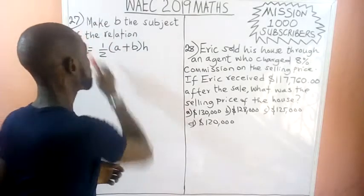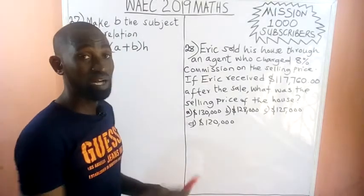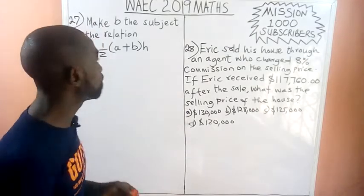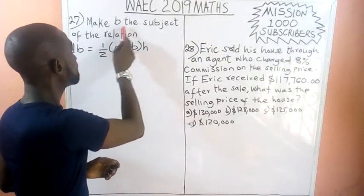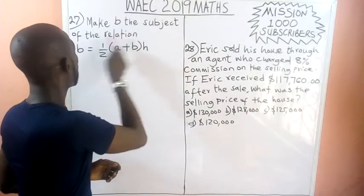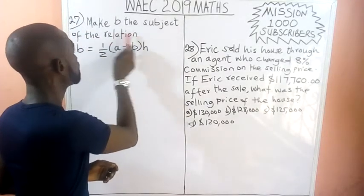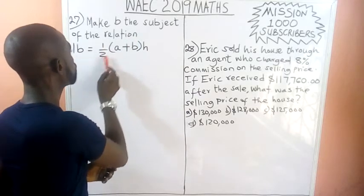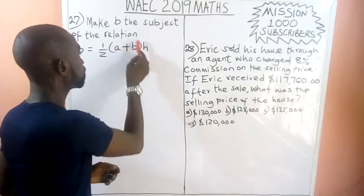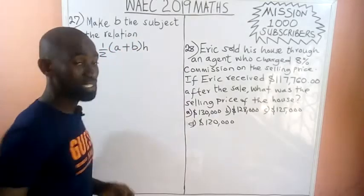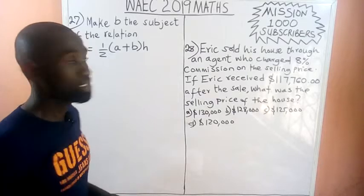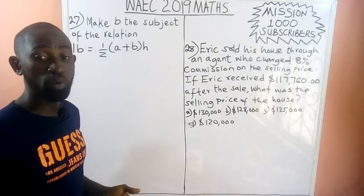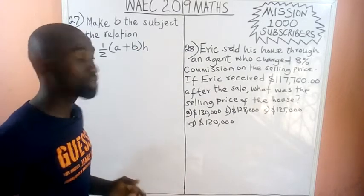We have question 27 and question number 28 to solve. The first one says: make b the subject of the relation lb equals one-half open bracket a plus b close bracket h. This is what we call change of subject of formula, under algebra.